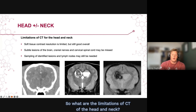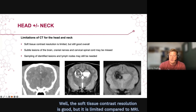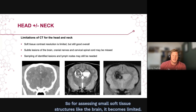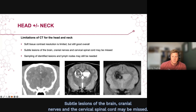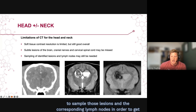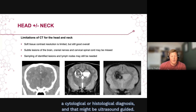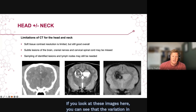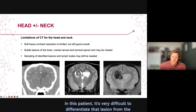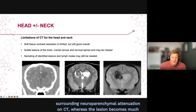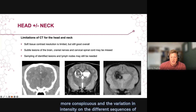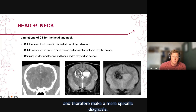The limitations of CT of the head and neck include the fact that soft tissue contrast resolution is good but limited compared to MRI. Subtle lesions of the brain, cranial nerves and cervical spinal cord may be missed. If lesions are identified, sampling those lesions and corresponding lymph nodes may still be needed for cytological or histological diagnosis, potentially ultrasound guided. An example shows an intraventricular haematoma that is difficult to differentiate from surrounding neuroparenchyma on CT, whereas on MRI the lesion is much more conspicuous and can be better characterised for a more specific diagnosis.